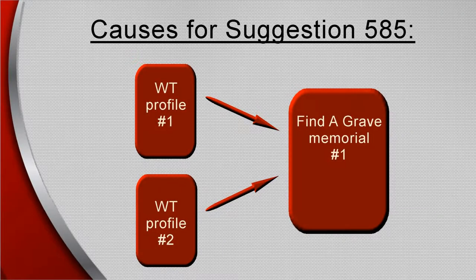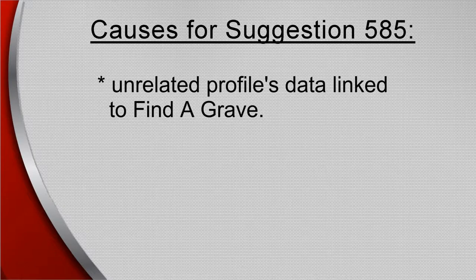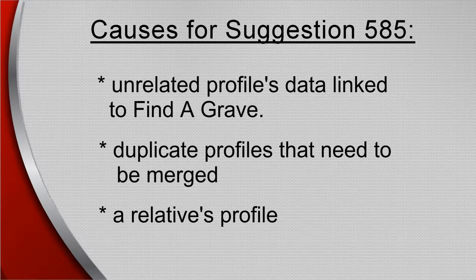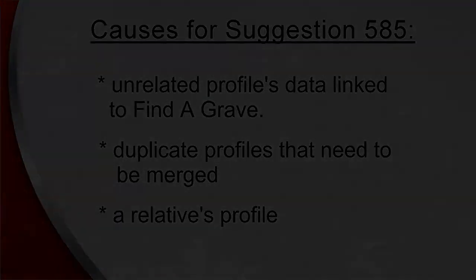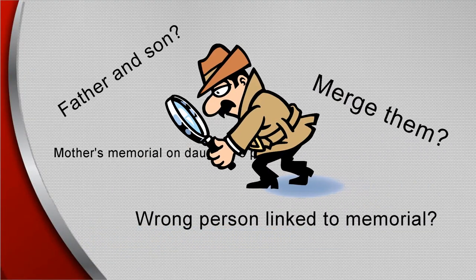Suggestion 585 is caused when one or more profiles with similar name, dates, and places are all linked to the same Find a Grave memorial that has matching data. It could either be from an unrelated profile's data mistakenly based on the Find a Grave information, from duplicate profiles that need to be merged, or from one of the profiles — such as for a relative with similar data — incorrectly linked to Find a Grave. One needs to be a detective to untangle the correct information from the wrong.